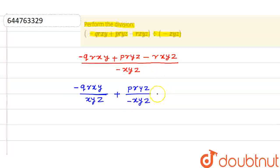And again, we have minus RXYZ upon minus XYZ. Now, see, there is only XY is here and XY is here, so only XY will be cancelled out, so this is XY will be cancelled out.